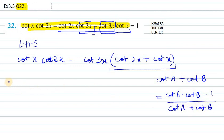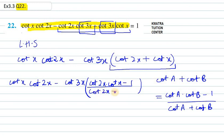Now, the first term is cot x dot cot 2x minus cot 3x. Then, we need to solve the second part that will be cot 2x dot cot x minus 1 over cot 2x plus cot x.